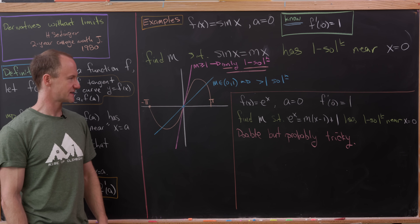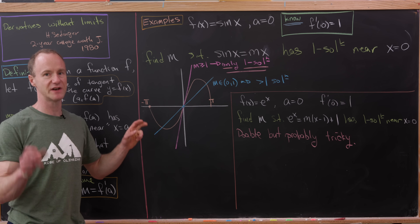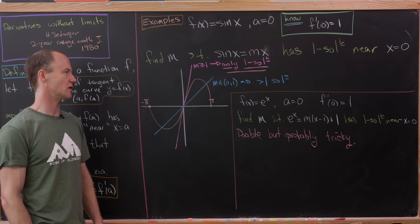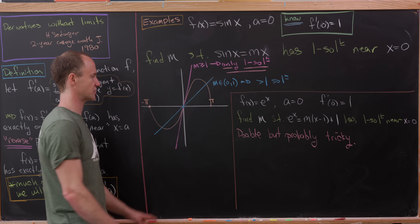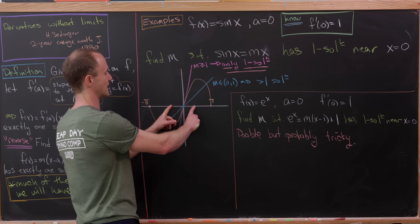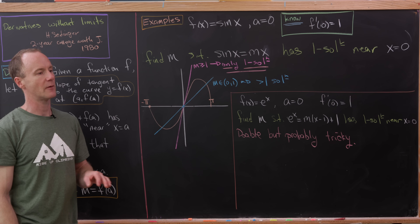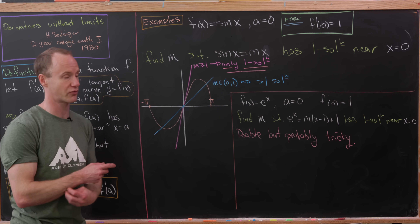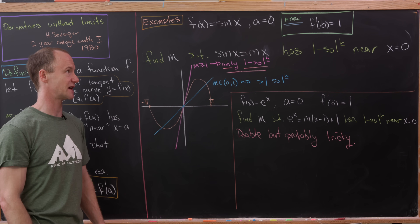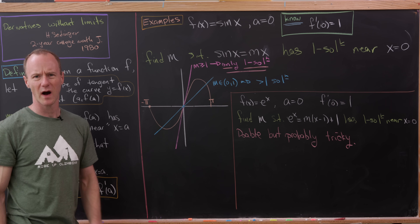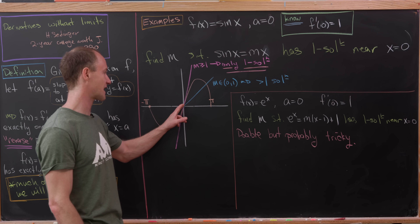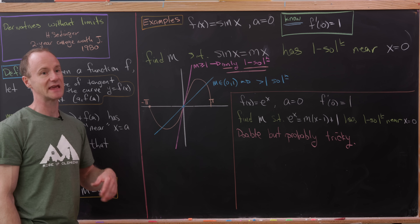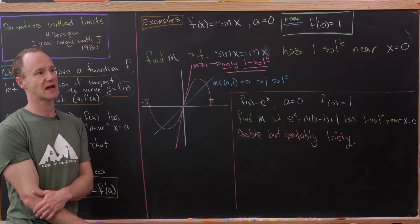You could argue that going in tighter — say to negative pi over 3 to pi over 3 — you'd also only get one solution. But any way you look at it, reversing the condition from the definition of the derivative does not properly define the derivative in the sine of x case at x equals 0. Why doesn't it work? I think it probably has something to do with the fact that x equals 0 is an inflection point for the sine function. My guess is that if you're away from an inflection point, this idea will work.